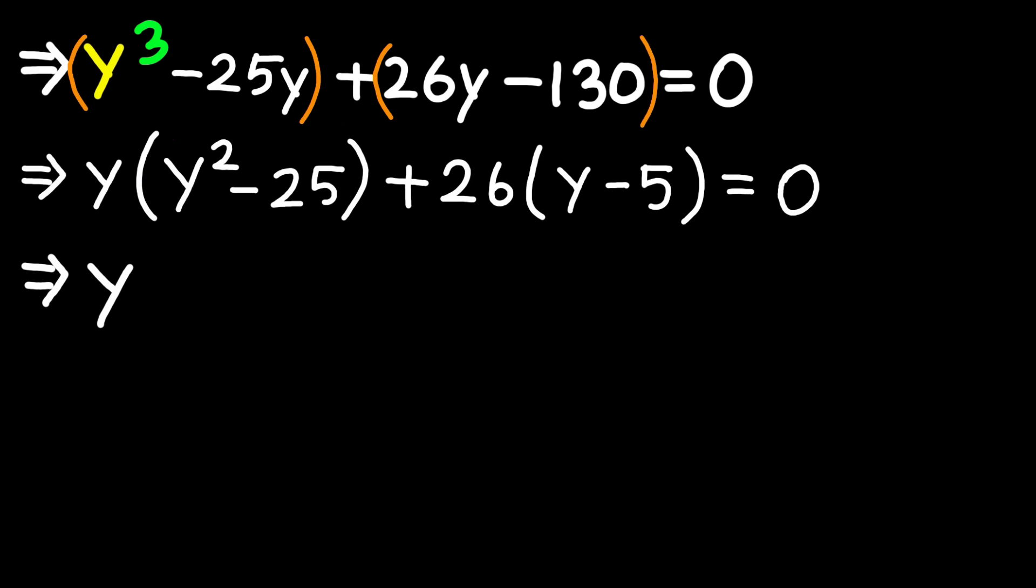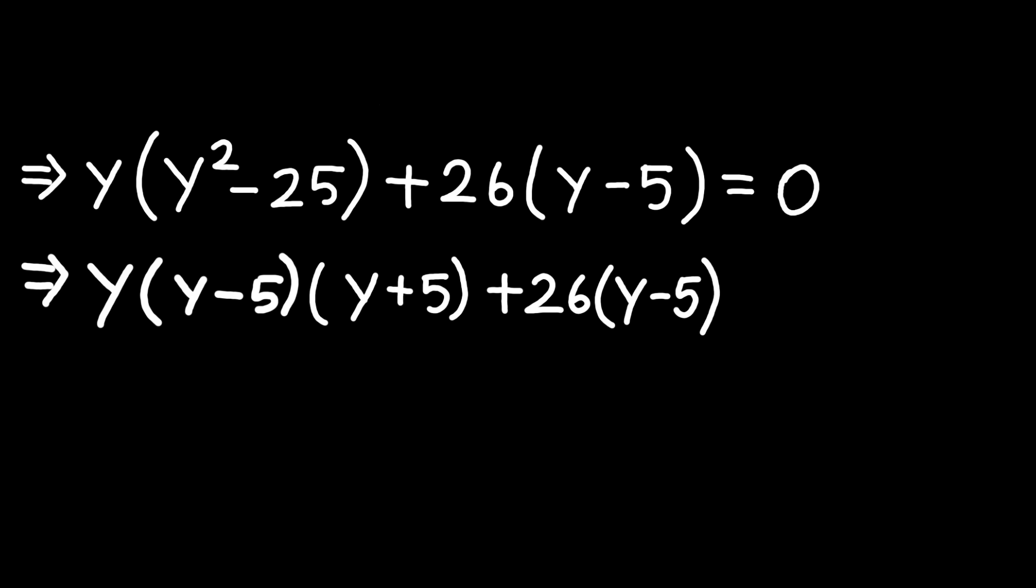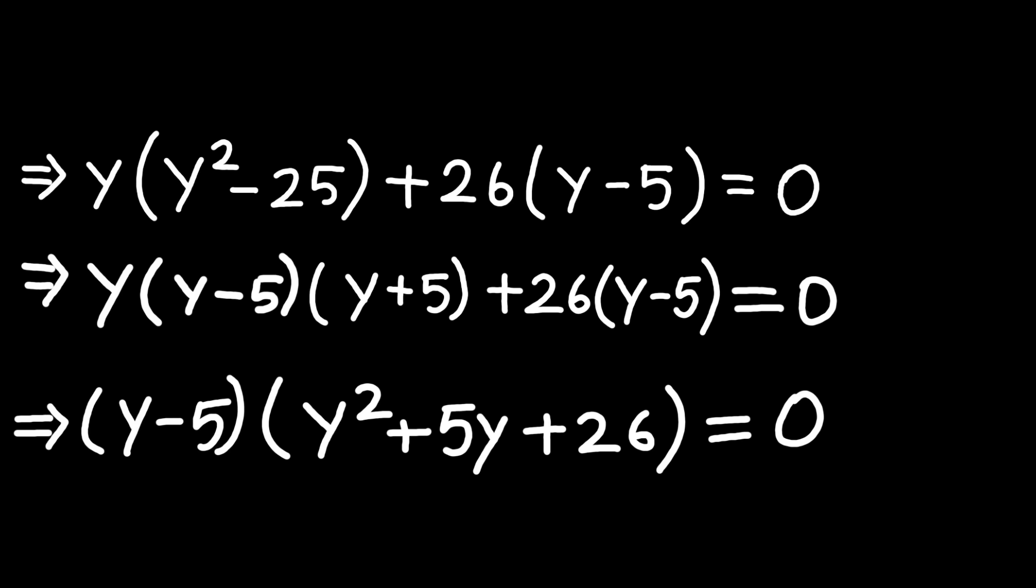We've got y multiplied by open bracket y minus 5 close bracket multiplied by open bracket y plus 5 close bracket plus 26 multiplied by open bracket y minus 5 close bracket equals 0. First thing my eyes notice, both terms have open bracket y minus 5 close bracket in them, and that's our common factor. So let's pull it out. Factoring that, we get open bracket y minus 5 close bracket multiplied by open bracket y squared plus 5y plus 26 close bracket equals 0.